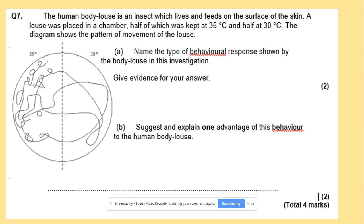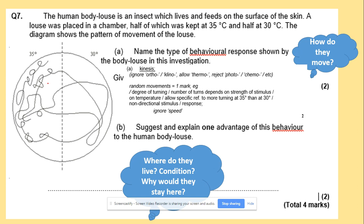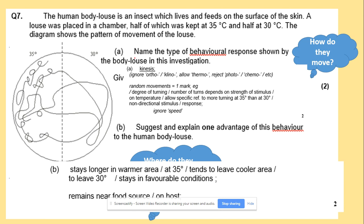Here's another question — pause the video and read through it. Name the type of behavioral response shown by woodlice in this investigation and give the evidence, then suggest and explain one advantage of this behavior. The behavior is kinesis because it's a random movement — it's definitely not taxis as it's not directed towards any specific stimulus, and the speed changes. They will stay longer in warmer areas, and they could remain there because of food availability.